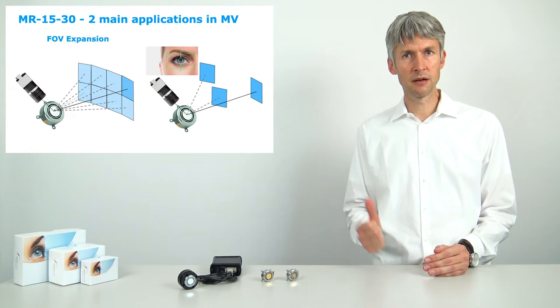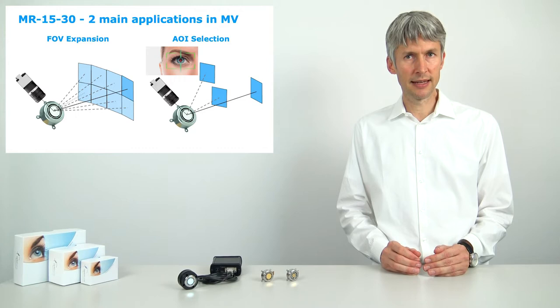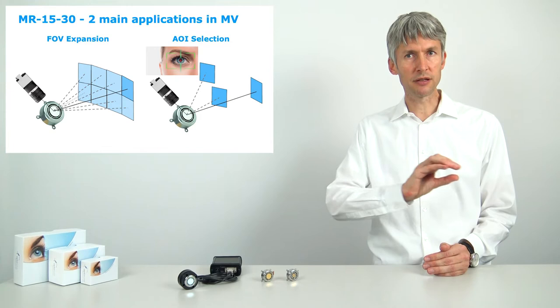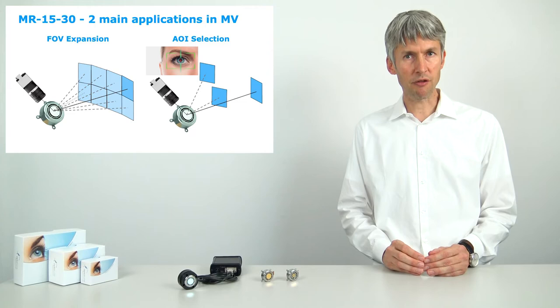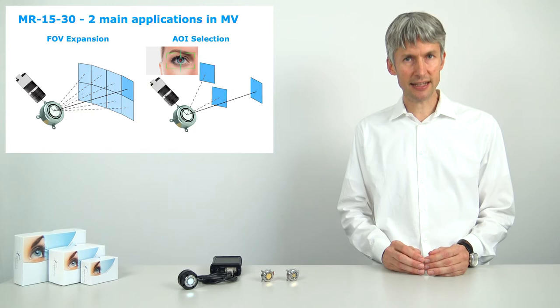This results in a very high resolution image by using a standard image sensor. On the right, the principle of area of interest selection is shown. The mirror allows to take a high resolution image anywhere within a large field of view. This can be of interest for example for eye tracking on distance of a few meters such as for gaming consoles, iris scanning, and surveillance.